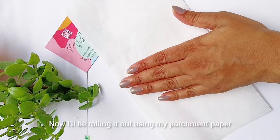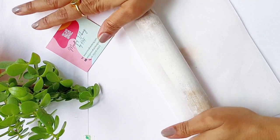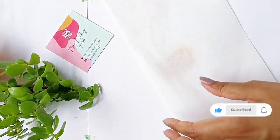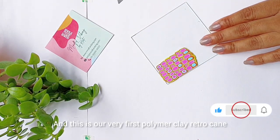Now I'll be rolling it out using my parchment paper and rolling pin to get a smooth surface to work with. And this is our very first polymer clay retro cane.